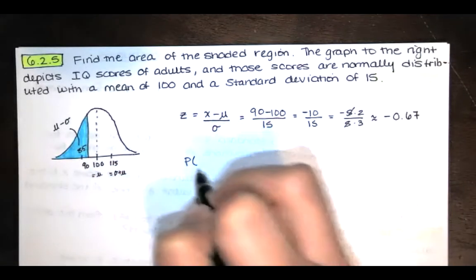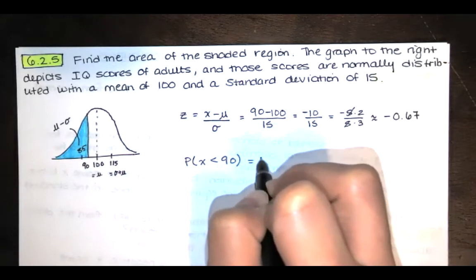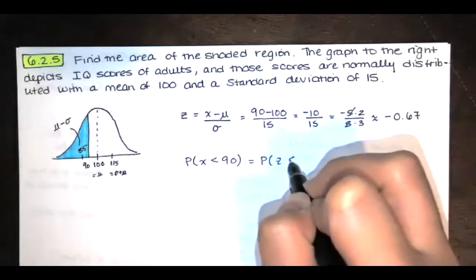That's what we will look up on our table. Now, I've only rounded to two decimal places because that's what our table shows. Now, if I'm trying to find this area, that's the same as this probability. So I'm trying to find the probability that x is less than 90, which is the same as the probability that z is less than negative 0.67. And I can find that probability by looking at a table.